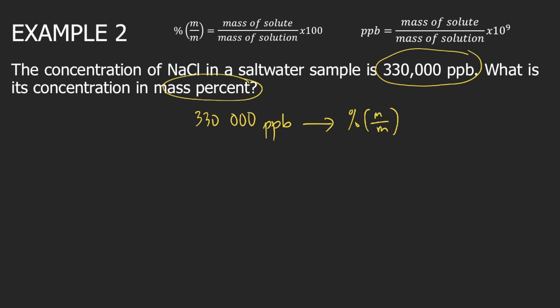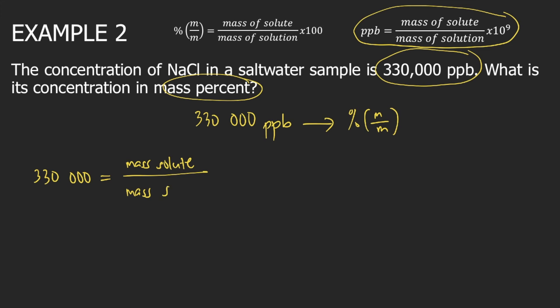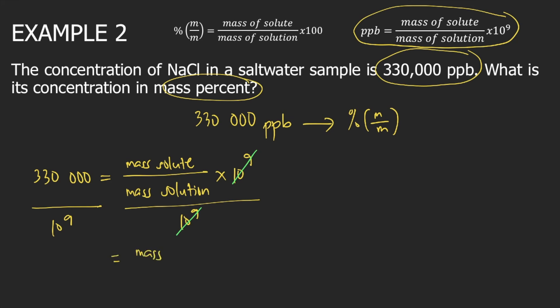Let's start with the formula for PPB. According to the formula, PPB — 330,000 — is equal to mass of solute divided by mass of solution, times 10 raised to 9. Divide both sides by 10 raised to 9, so 10 raised to 9 will cancel on the right side, leaving mass of solute divided by mass of solution. On the left side, you have 330,000 divided by 10 raised to 9, or 1 billion, which equals 0.00033.